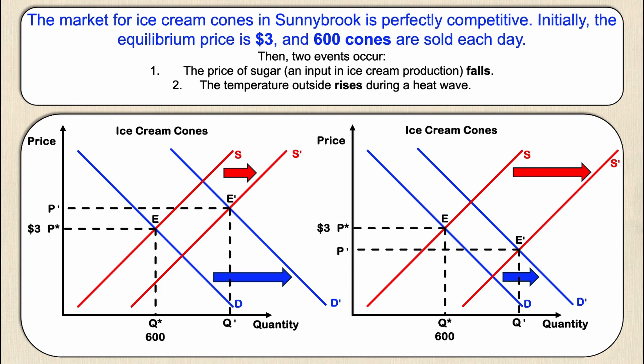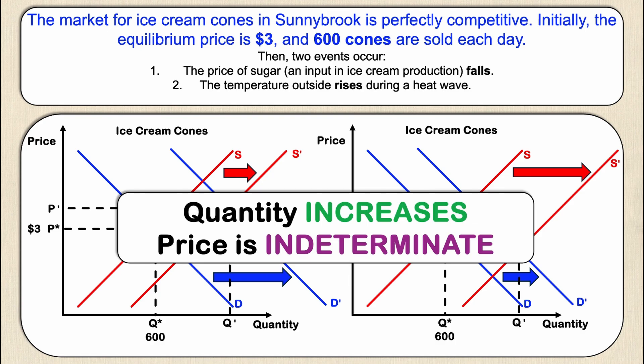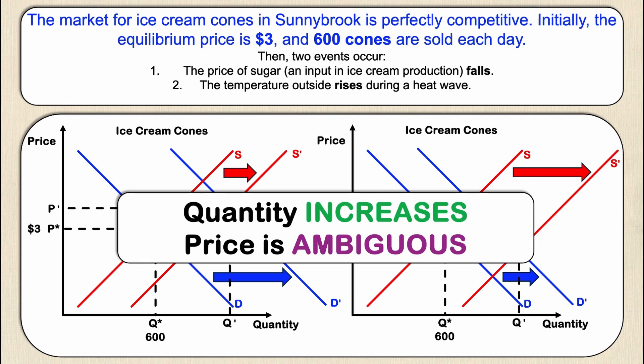No matter which curve shifts more, quantity will always increase. So on a homework assignment or test, quantity increases — that's definitive. However, price is indeterminate. We don't know if price goes up or goes down because we're not given the magnitude of the two events and don't know which curve shifts more. Because of that, we don't know whether the graph on the left or the graph on the right is correct. Price is indeterminate — also called ambiguous — meaning it's simply unknown. So no matter which graph you draw, as long as it's properly labeled and no magnitude is given in the question, both are correct.